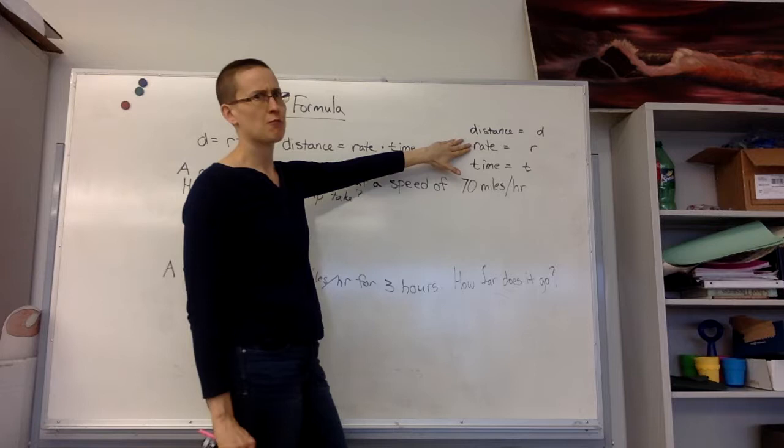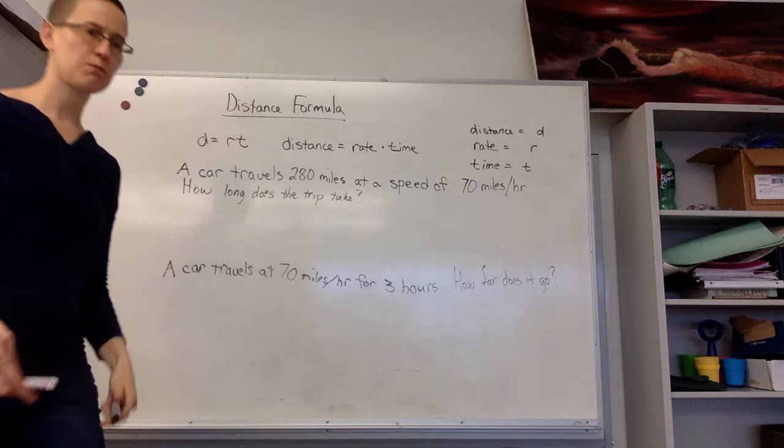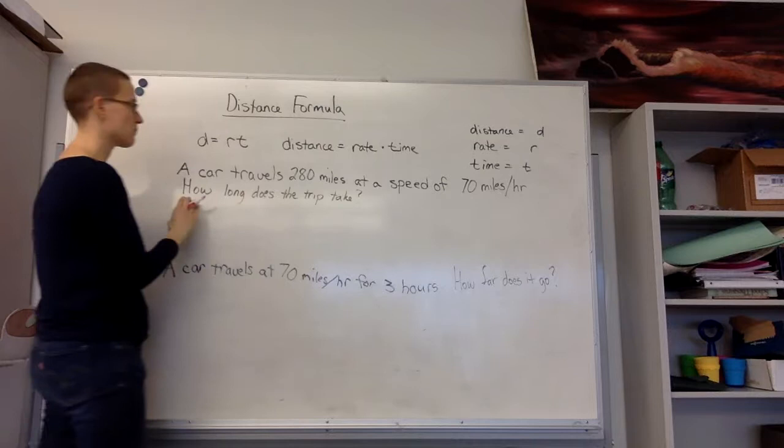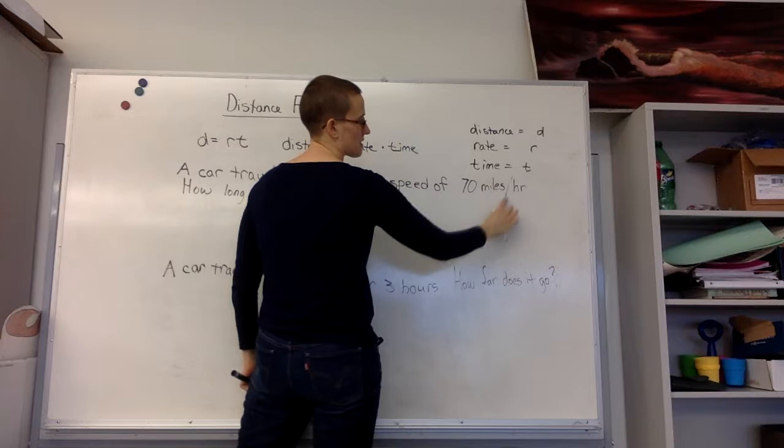When we work through a problem involving the distance formula, we're going to start by listing out the different pieces we have. So the first problem: a car travels 280 miles at the speed of 70 miles per hour. Notice miles per hour - we use a division bar, so that means miles divided by hours.